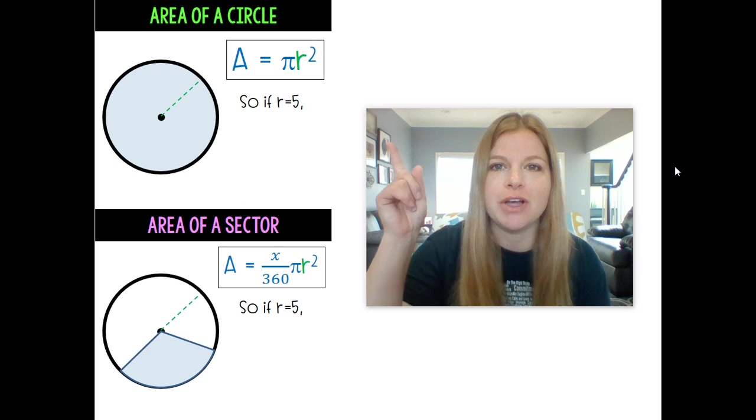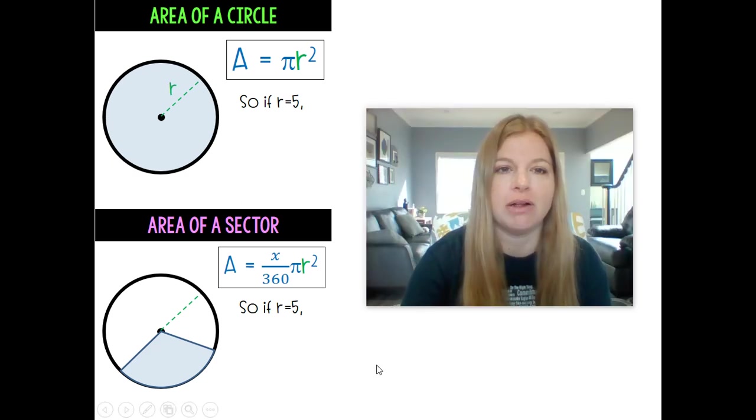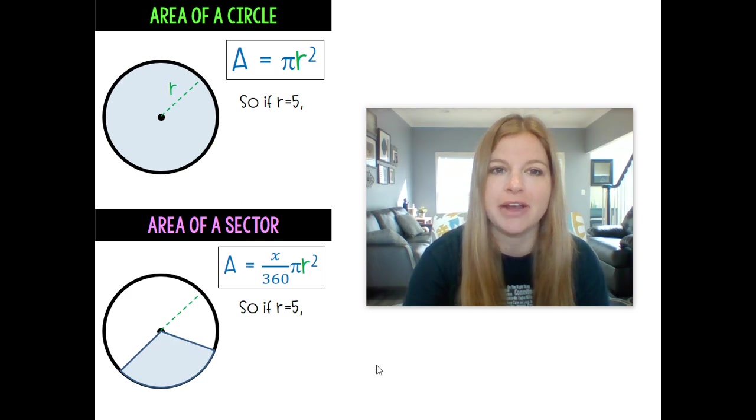Okay, so first off, let's take a look at the area formula for a circle. We should already know this formula. It's simply area is equal to pi r squared. So if I gave you the radius and I called it 5 and there's my radius in my diagram, I would simply do area equals pi times 5 squared.